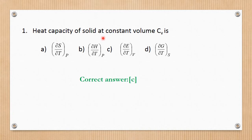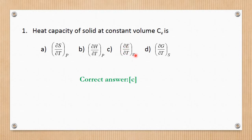The heat capacity of a solid at constant volume is Cv, where V is constant. The options are: pressure constant, entropy constant, volume constant, or constant torque. The main question concerns Cv at constant volume.